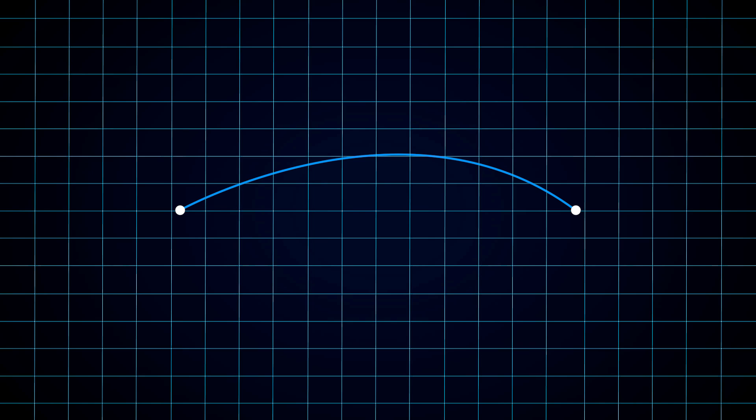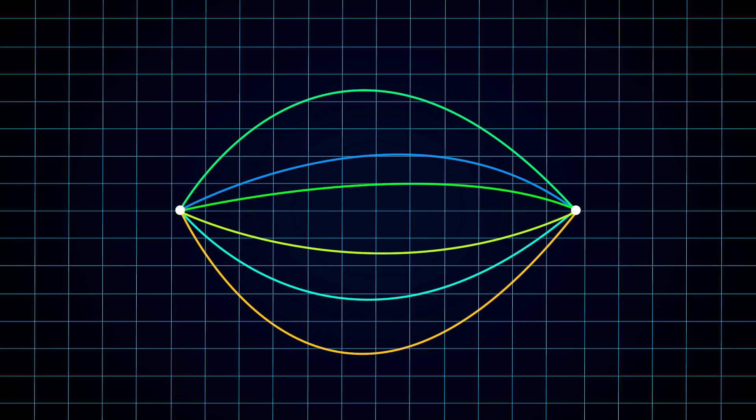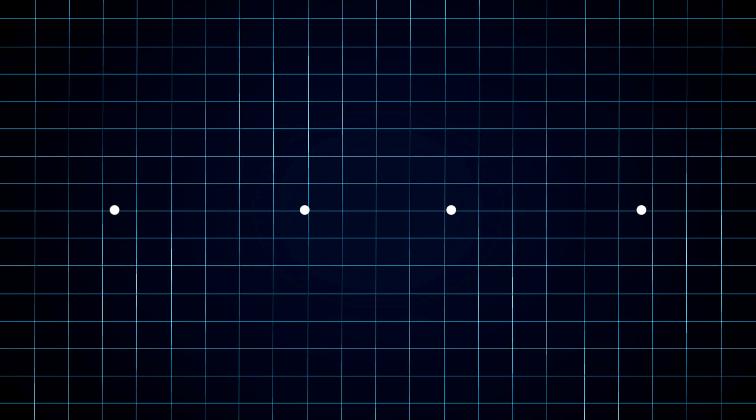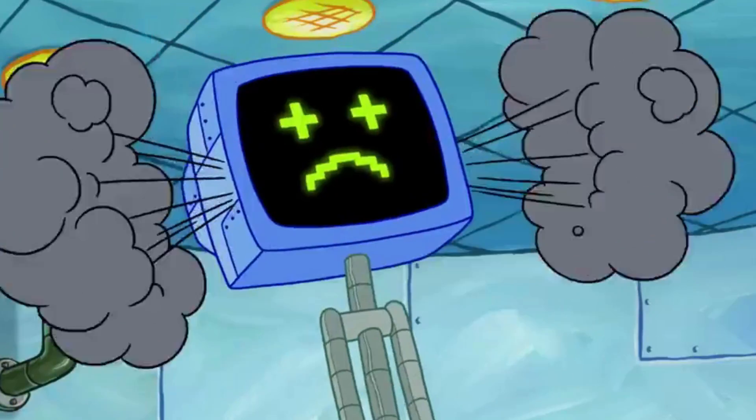But what if we try to connect them with a curve? All of a sudden there's an infinite number of ways we could do this. So how do we differentiate these lines? What makes the purple line different from the orange? To the human eye the answer is simple, the purple line is longer and more curvy. But what does this mean to a computer? How do we express this through numbers?